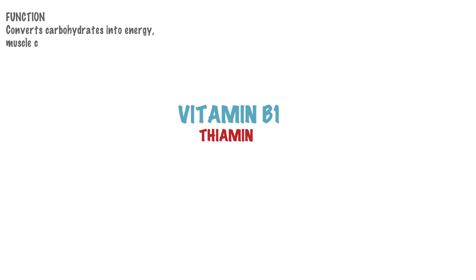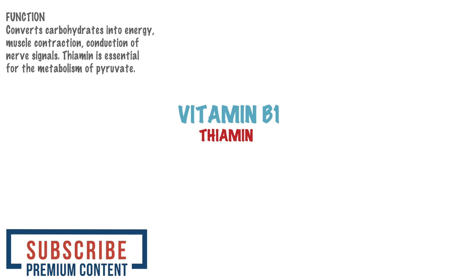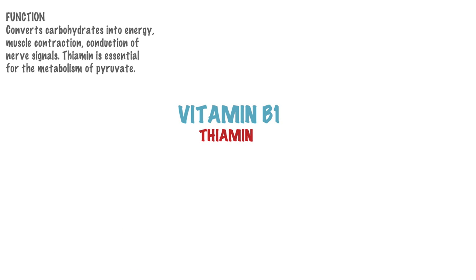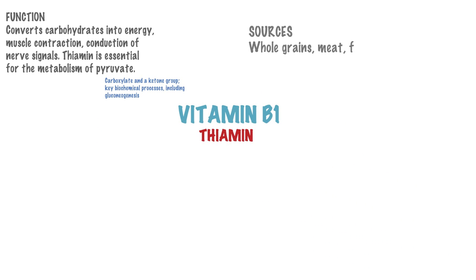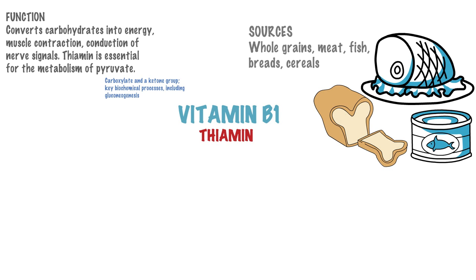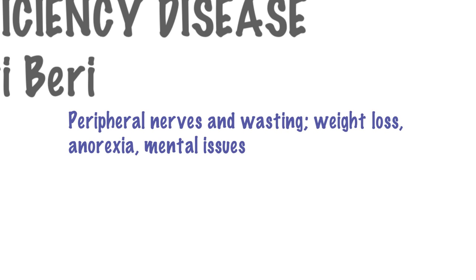Let us now look at Vitamin B1, also known as thiamine. Vitamin B1 helps the body's cells change carbohydrates into energy. It plays a role in muscle contraction and conduction of nerve signals as well. Thiamine is known to be essential for the metabolism of pyruvate — a biological molecule that consists of three carbon atoms and two functional groups: a carboxylate and a ketone group. It is involved in key biochemical processes including gluconeogenesis, which is the synthesis of glucose. Sources for Vitamin B1 include whole grains, meat and fish, breads and cereals. The disease caused by deficiency of Vitamin B1 is known as beriberi, which involves problems with the peripheral nerves and wasting. Weight loss, anorexia and mental issues such as confusion and very short-term memory are also associated with beriberi.